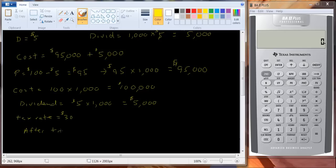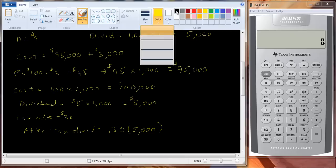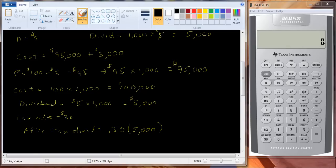So your tax on the dividends is going to be equal to 30% times $5,000, which is going to be $1,500. So you've spent $1,500 on taxes.